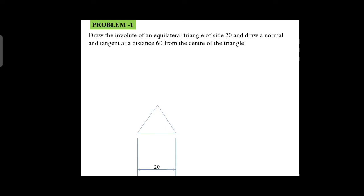Draw an equilateral triangle with side 20 mm. After drawing the triangle, you will locate the fixed point in the right corner. Then you locate the remaining corner points 1, 2, 3.